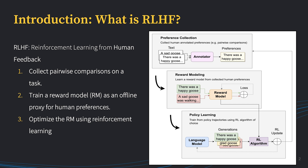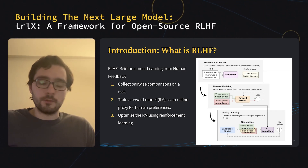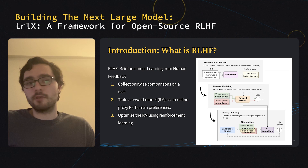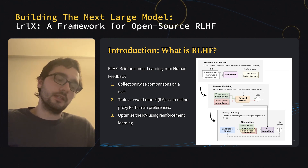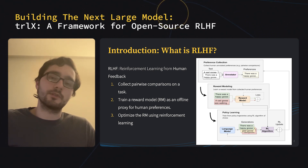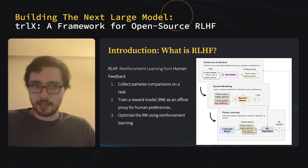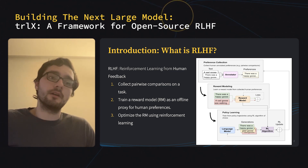Then, once this reward model has been learned, we optimize against it using a reinforcement learning algorithm, most commonly Proximal Policy Optimization or PPO. And this results in a downstream student model which is able to write happy stories — or more generally, is aligned to the preferences collected in stage one and distilled into a reward model in stage two. And this makes up the RLHF pipeline.